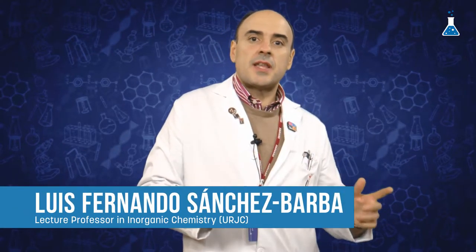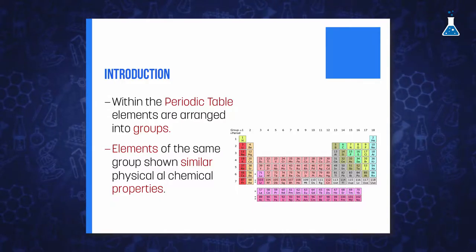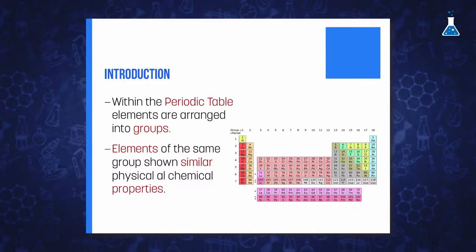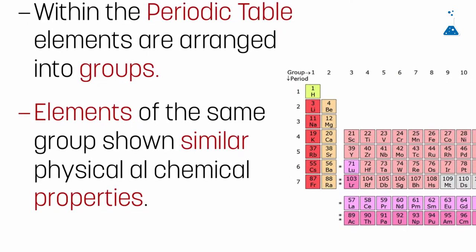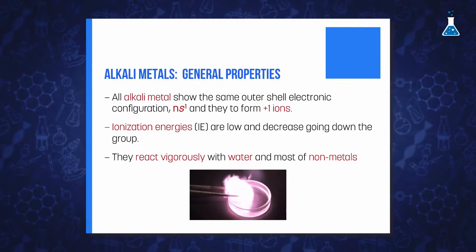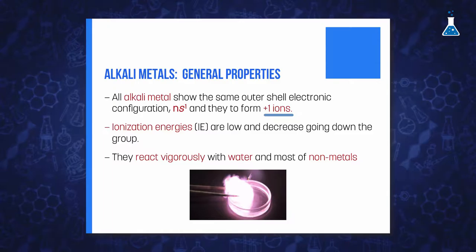In a general chemistry course we study how elements are arranged within the periodic table into different groups or columns, where the elements of each family tend to have similar characteristics and properties. The elements of group 1 are an excellent example to illustrate this periodic classification because of the relevant similarities in both chemical and physical properties. All elements of group 1 share the same outer shell electronic configuration NS1 and they have a great tendency to form ions +1 to achieve the noble gas configuration.